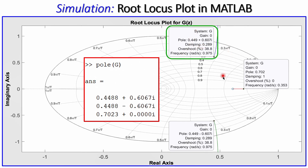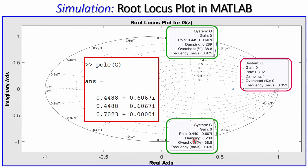The root locus plot confirms the three poles: two complex conjugate poles and one real pole, all labeled inside the unit circle. This matches the output from the MATLAB command window. We have now confirmed using three different forms of simulation that the system is indeed stable, consistent with our Jury stability test calculations. This was example number one — see you next time, take care.